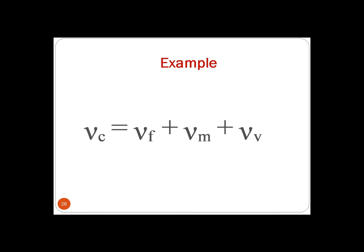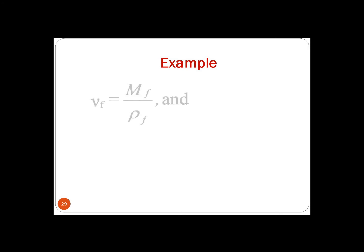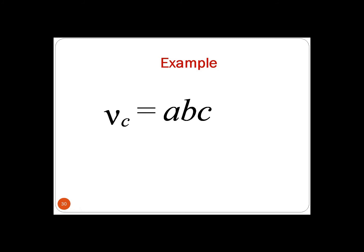The solution: the total volume of the composite VC is the sum of the volume of fiber VF, matrix VM, and void VV, giving VC equals VF plus VM plus VV. From the definition of density, small VF equals MF divided by rho F, and the matrix volume VM equals (MC minus MF) divided by rho M. Since the specimen is a cuboid, the volume of the composite VC equals A times B times C.